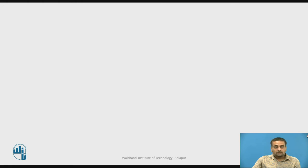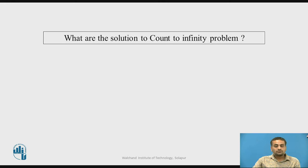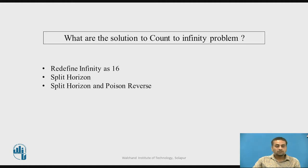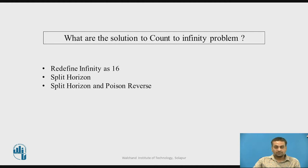Here you may pause the video and try to answer this question: what are the solutions to the count-to-infinity problem? This problem is with the distance vector routing algorithm. The three possible solutions are: redefining infinity, meaning the maximum number of hops a packet can travel is made to 16 — 16 hops is considered not reachable — split horizon, and split horizon with Poisson reverse.